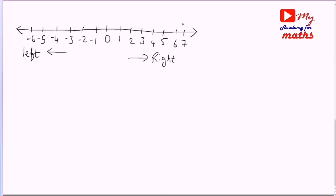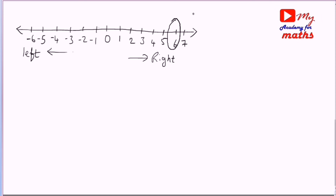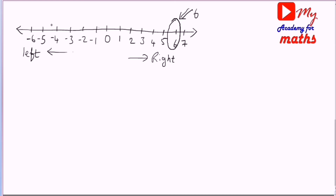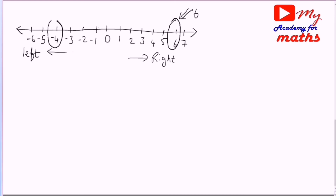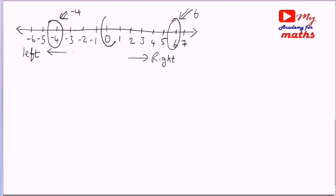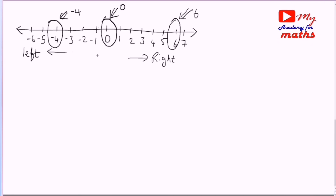On the number line, indicate the integers: 6, minus 4, 0, and 4. Mark each integer: 6 on the right, then 0 as the neutral number, minus 4 on the left, and 4 on the right side.